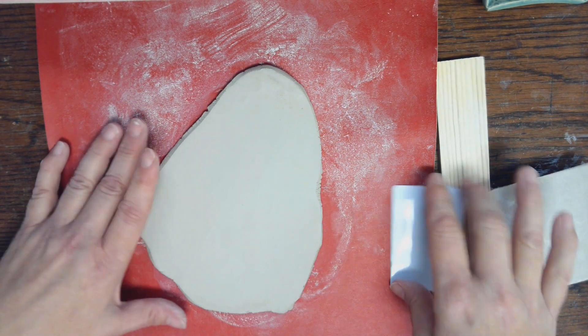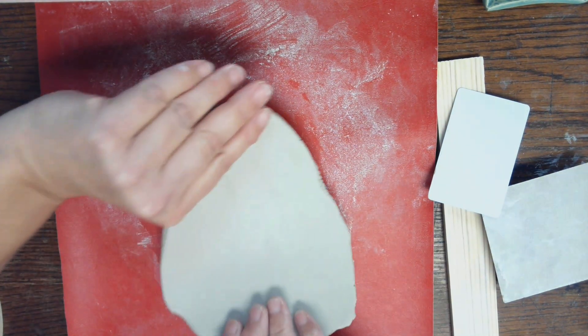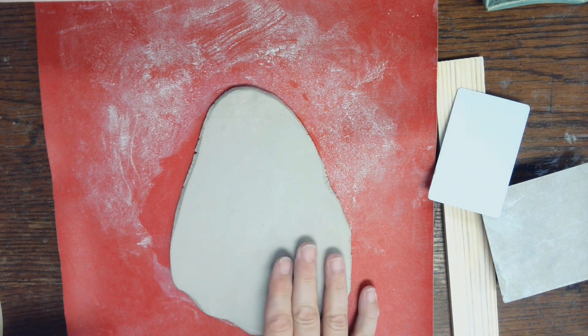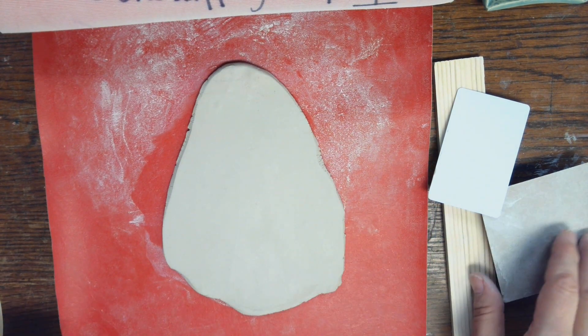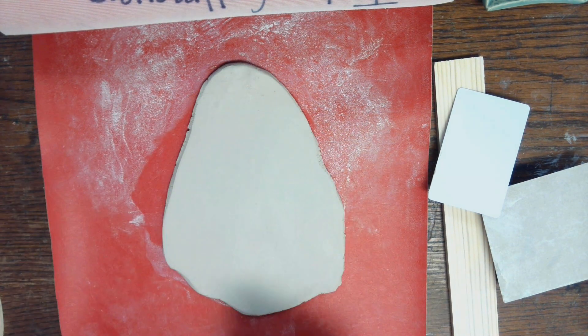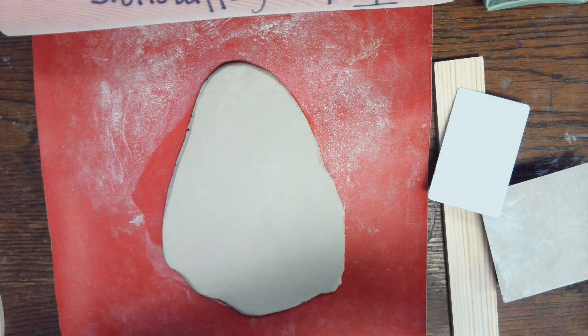Once I've made my simple slab and I've smoothed the surface on both sides and it's released and doesn't have any problems, then I want to consider any decoration. So if I'm wanting just a smooth dish, I'd move on to shaping next. If I'm wanting to have texture and patterns on it, that's what I would actually do next.